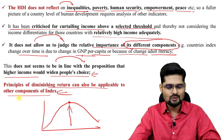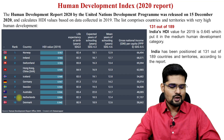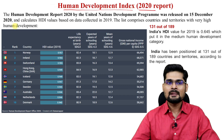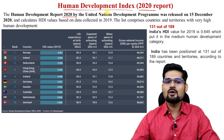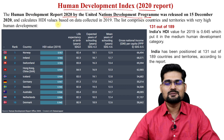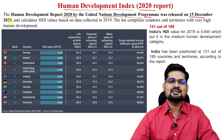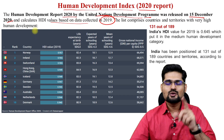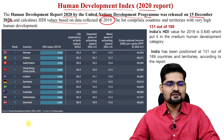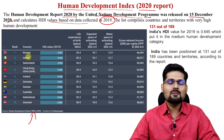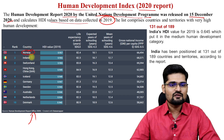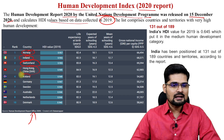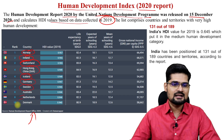Looking at the latest HDI Report of 2020, released by UNDP on 15th December 2020, it calculates HDI values based on data collected in 2019. The top 10 countries are: Norway, Ireland, Switzerland, Hong Kong, Iceland, Germany, Sweden, Australia, Netherlands, and Denmark.